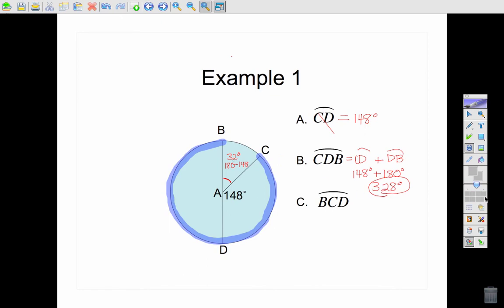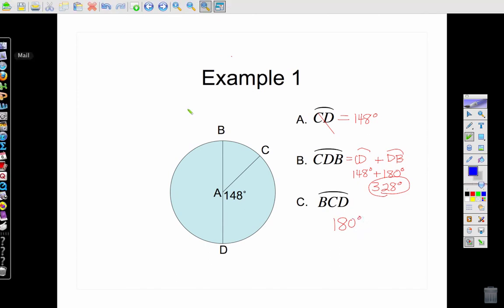Now if I want BCD, let's go ahead and erase first. BCD is a semicircle, and that's just going to be 180 degrees. That is halfway around.